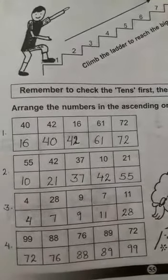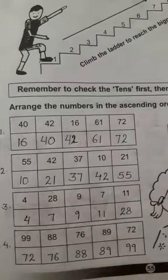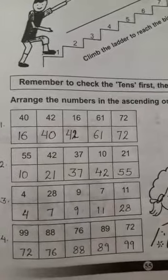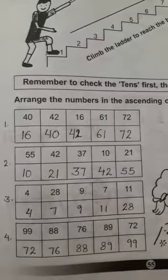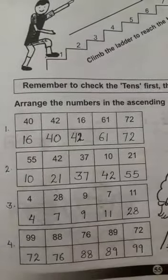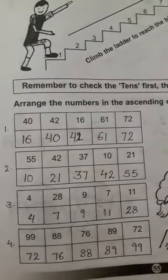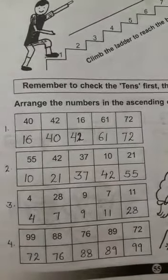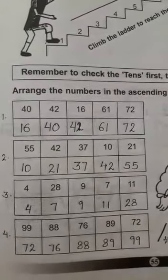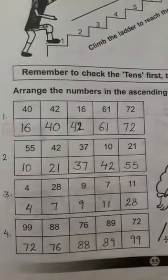According to the number line, 1 is the smallest, so our first number is 16. Now, 40 and 42 both have 4 at the tens place, so in this case we should go to the ones place. That is 0 and 2. Since 0 is less than 2, 40 is our next number followed by 42.